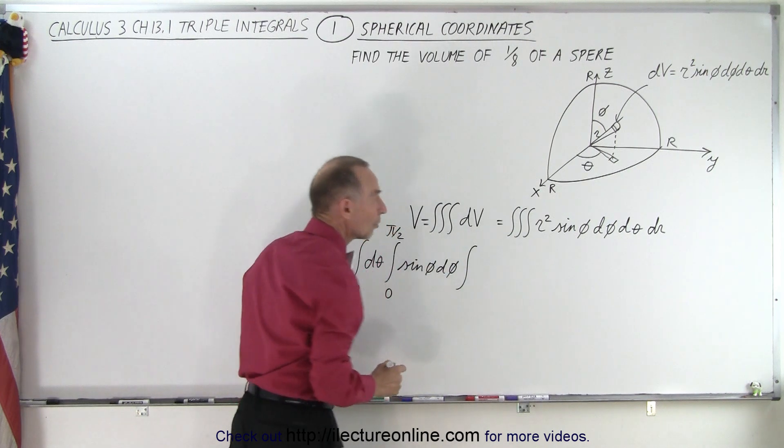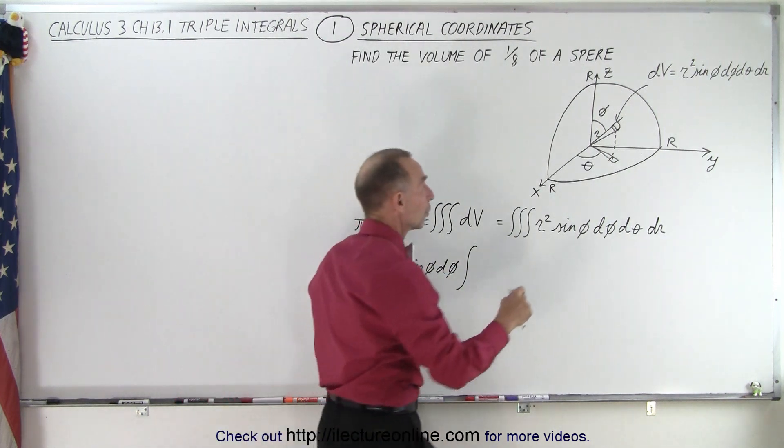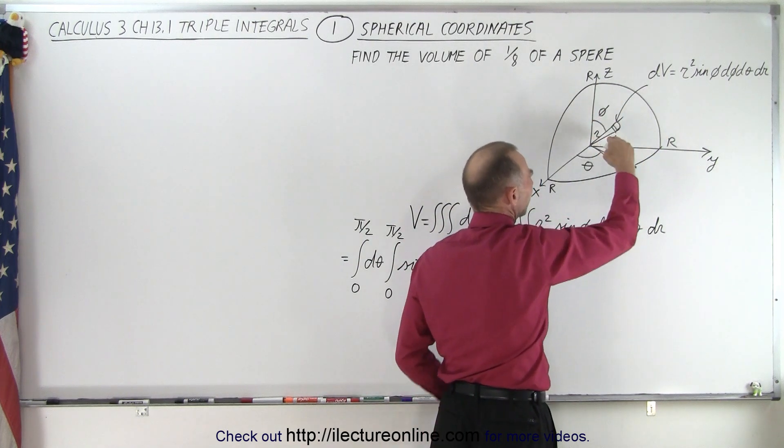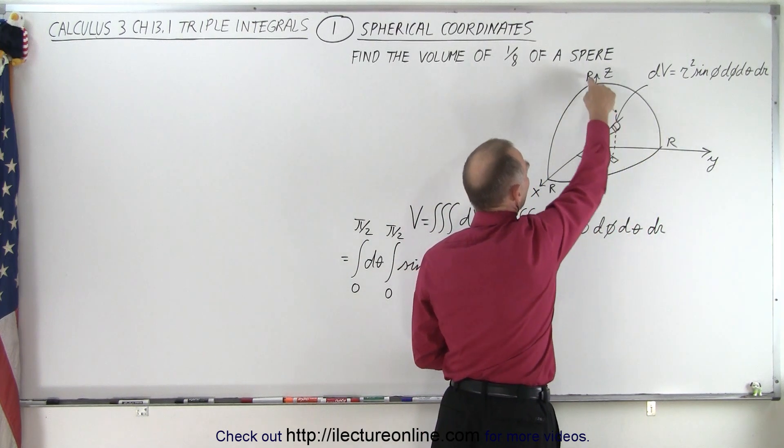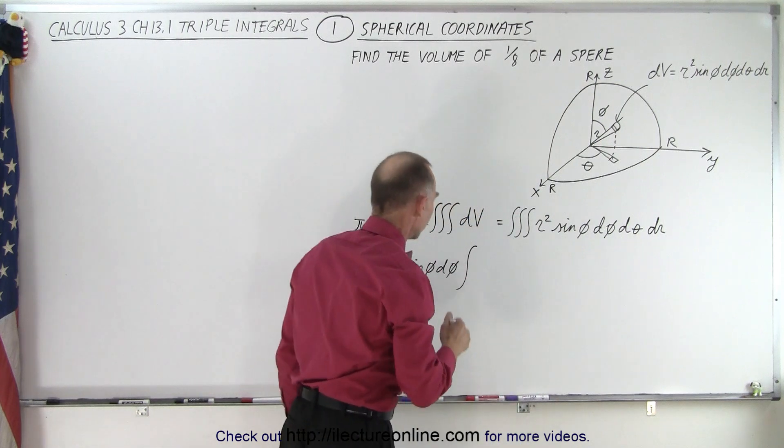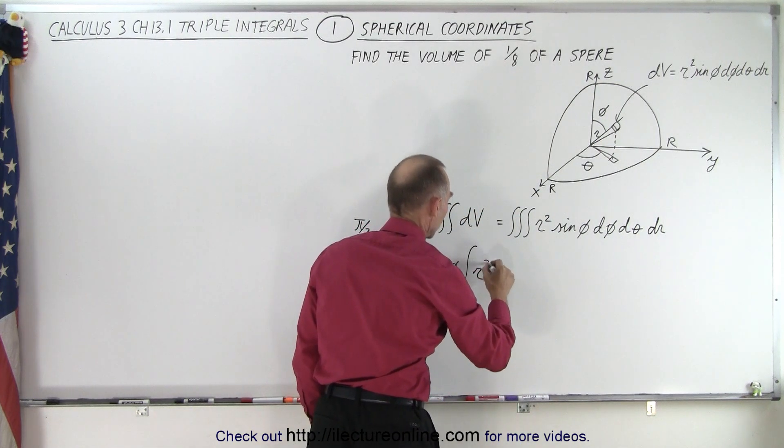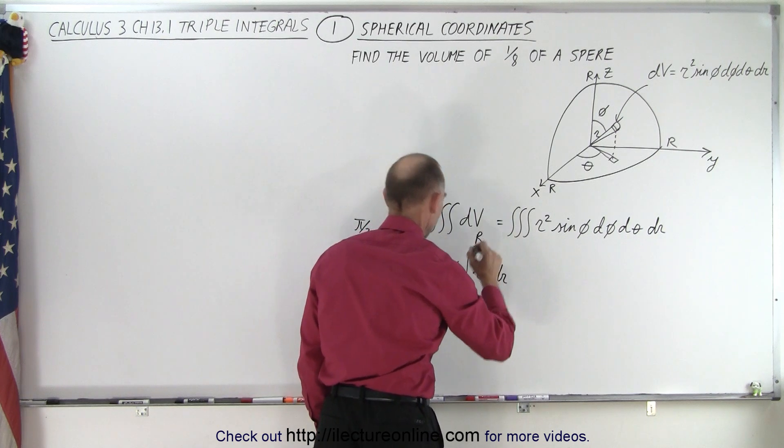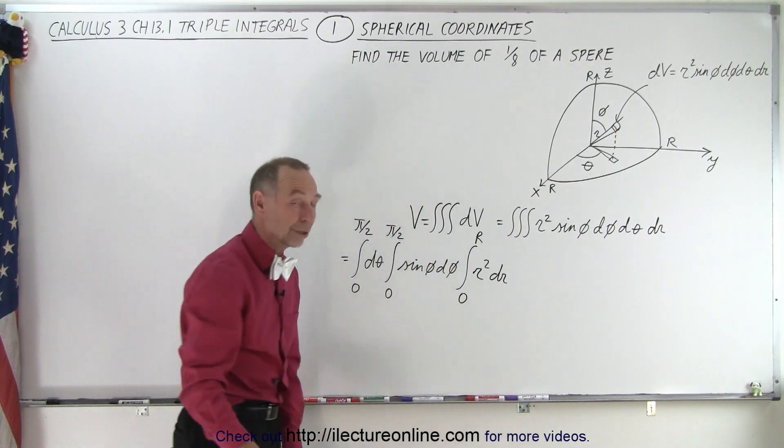And then we're going to integrate over the radius. Now we have to go from the origin all the way out to the edge of the sphere, or the one-eighth of a sphere. Notice that the radius of the sphere is r, so there we have r squared dr, and we integrate from 0 to r.